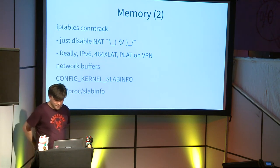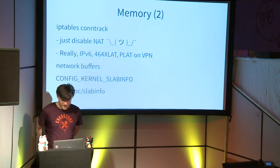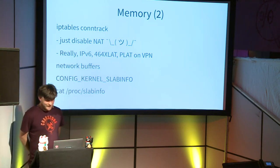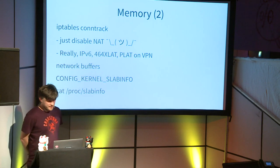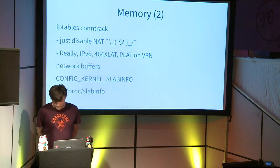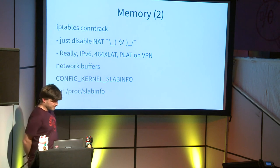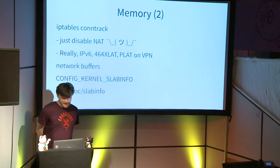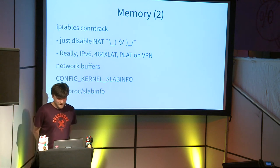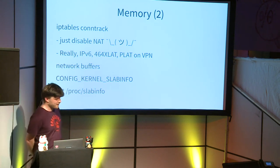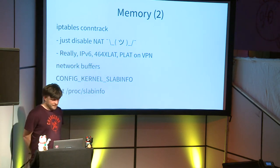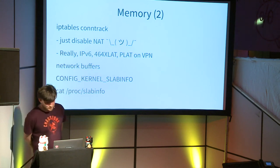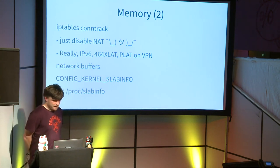If you run everything over IPv6 you can disable NAT/conntrack, because conntrack needs to keep every connection in memory and this can cost a lot of memory. I'm not sure whether 32 megabytes is sufficient for many clients and connections — there are network buffer settings you can tune, but I think the defaults are not that bad.